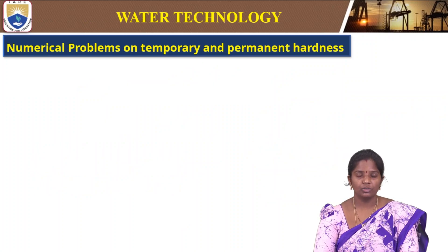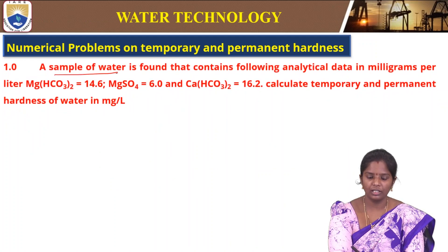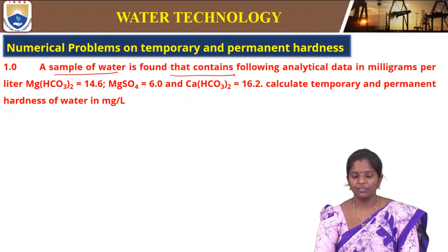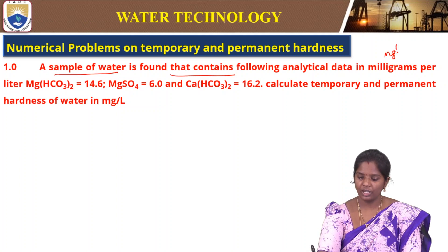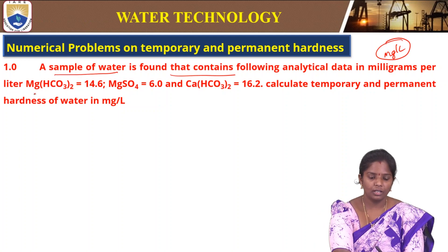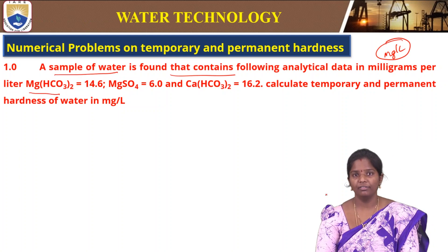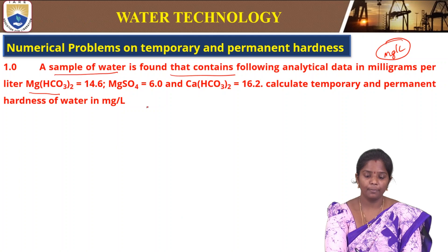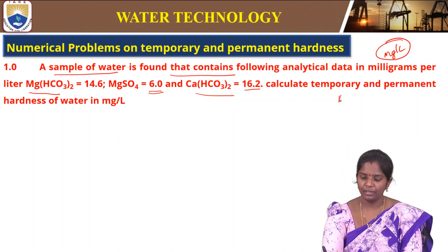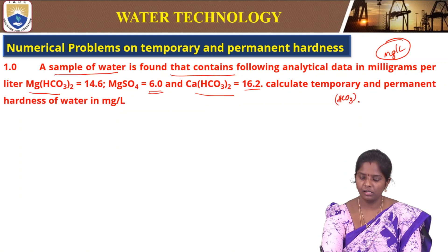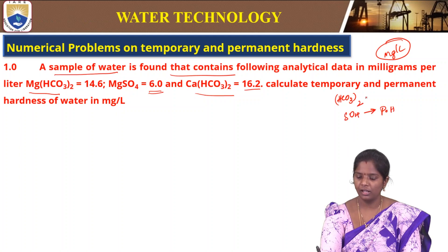A sample of water is found to contain the following analytical data in mg per liter: magnesium bicarbonate is 14.6 mg/L, magnesium sulphate is 6 mg/L, and calcium bicarbonate is 16.2 mg/L. We have bicarbonates and sulphates — sulphate will contribute to permanent hardness, and bicarbonates will contribute to temporary hardness.